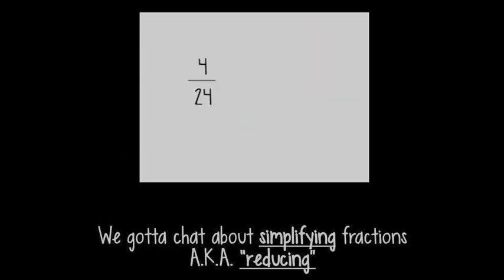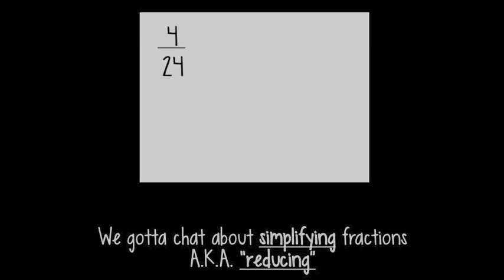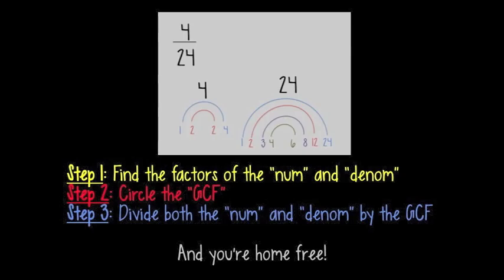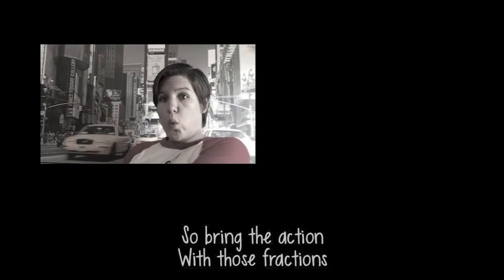Now we got to chat about simplifying fractions, a.k.a. reducing — that means writing your answer in lowest terms. Step 1: find the factors of the numerator and denominator. Step 2: circle the GCF. Step 3: divide both the numerator and denominator by the GCF, and you're home free. Action with those fractions.